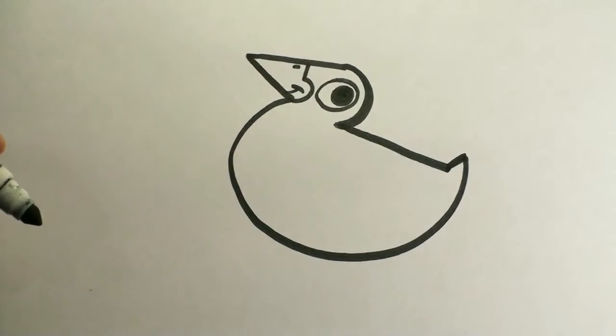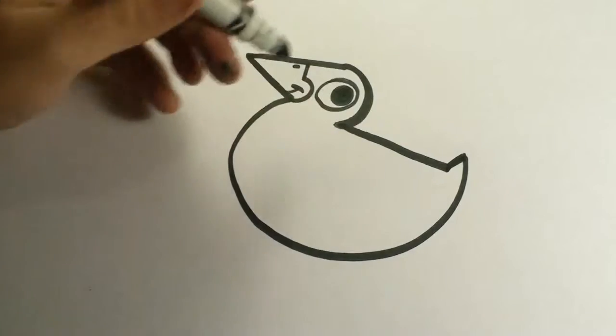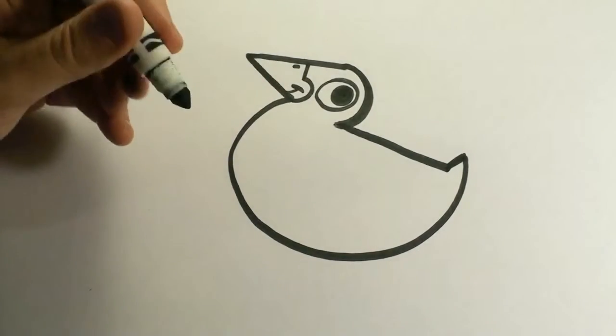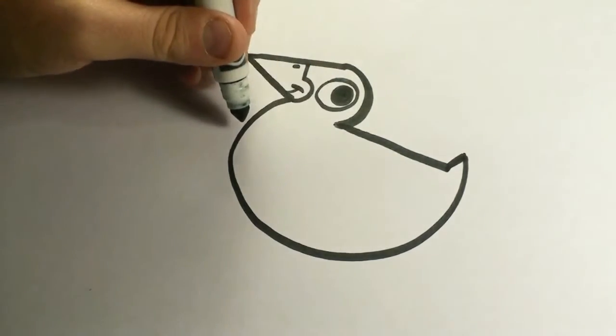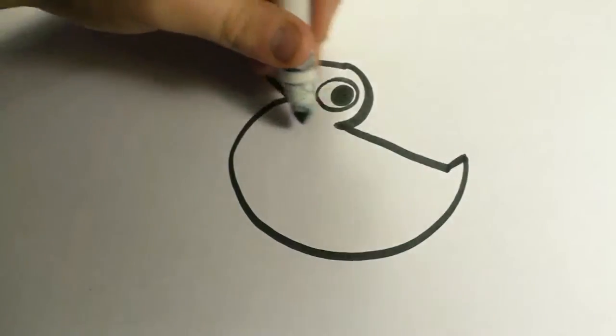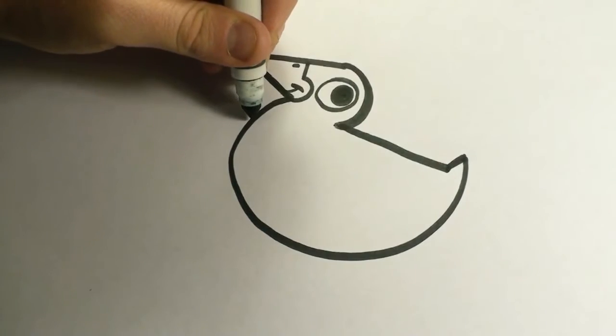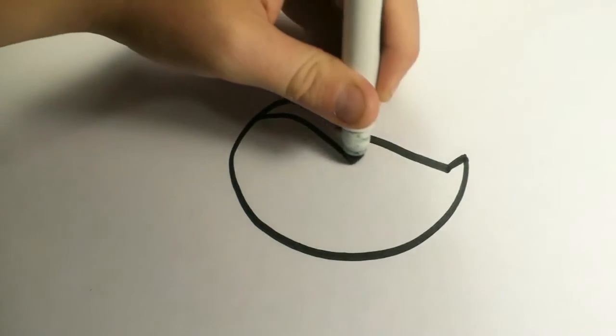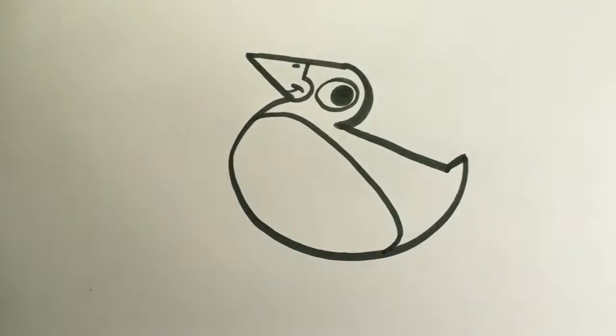Now penguins are black and white, so we're going to separate his body right now, so we know which part is which. His belly is going to be white, and what we're going to do is draw almost like an oval, like this is part of our oval, and we're just going to finish it off inside. So we're going to go up, around, and down. There's his belly.